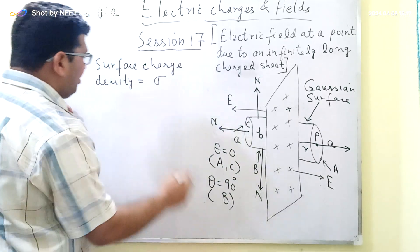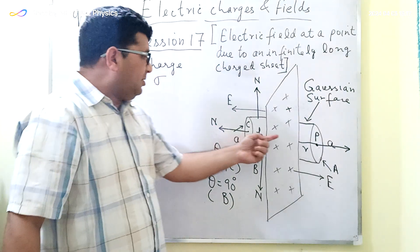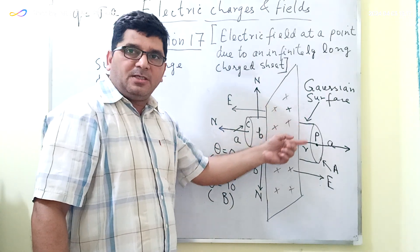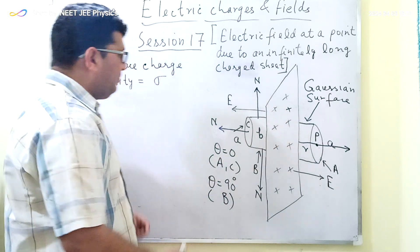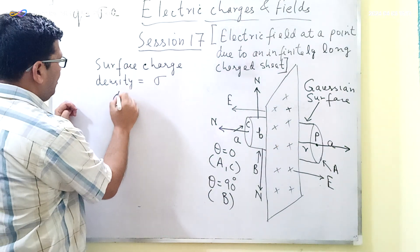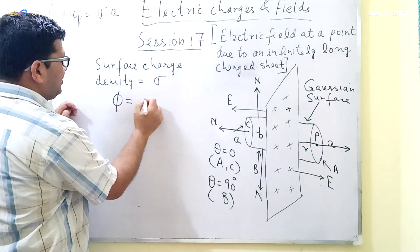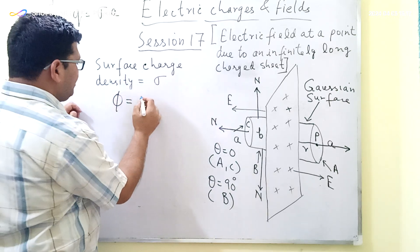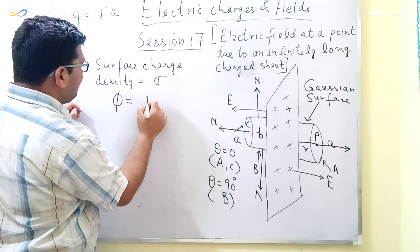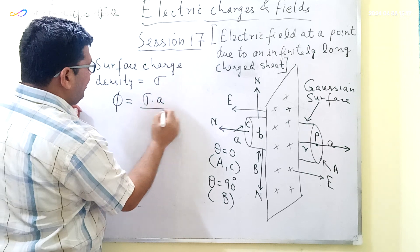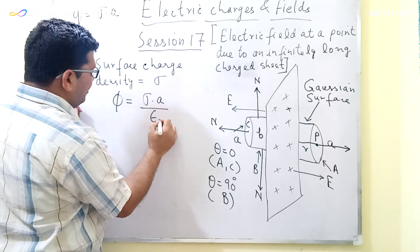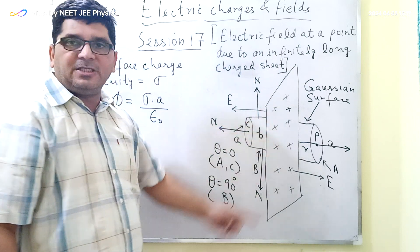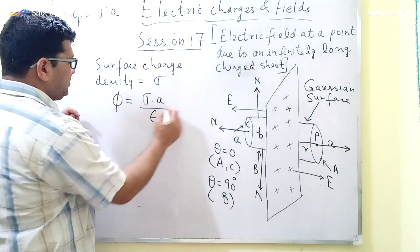As per Gauss's Law, the total electric flux through this Gaussian surface equals the total charge enclosed divided by epsilon-naught, which gives us Sigma times A divided by epsilon-naught. Here we are considering that the infinitely long charge sheet is placed in free space. This is our first equation.